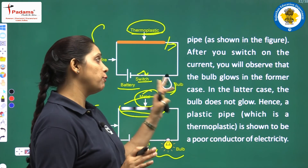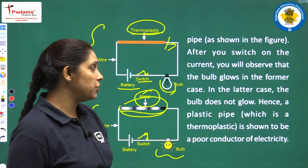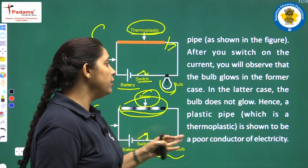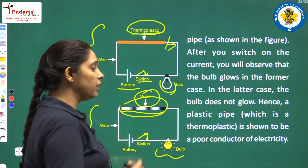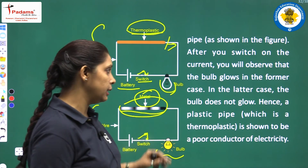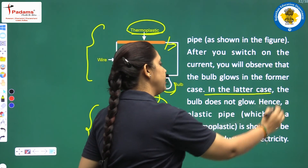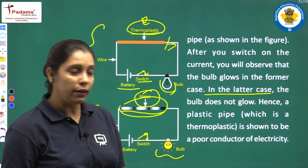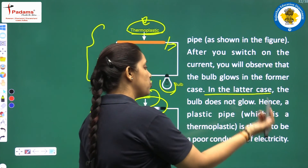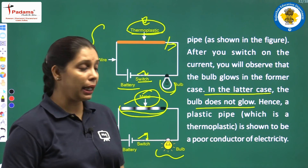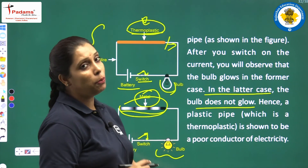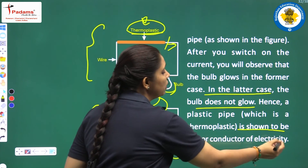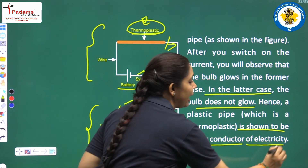After you switch on the current, you will observe that the bulb glows in the former case — that is the metal circuit. In the later case — with thermoplastic — the bulb does not glow. Hence a plastic pipe, which is a thermoplastic, is shown to be a poor conductor of electricity. You have to make both circuit diagrams.